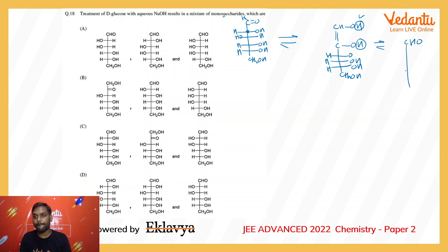The C2 epimer will be CHO, CH2OH, HOH, HOH, and OHH. This is the C2 epimer of glucose, that is mannose.